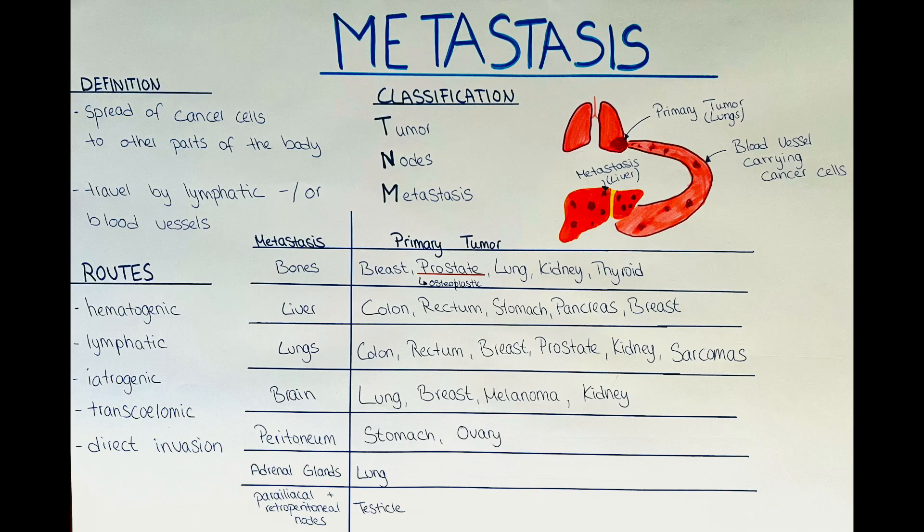Sometimes we also see metastasis to the brain, and if we see a brain metastasis we often think about cancers from the lung, the breast, melanoma — so skin cancer — as well as kidney cancers. We should not forget that many cancers spread first to regional lymph nodes, as they are part of the lymphatic system, a primary pathway for cancer spread.